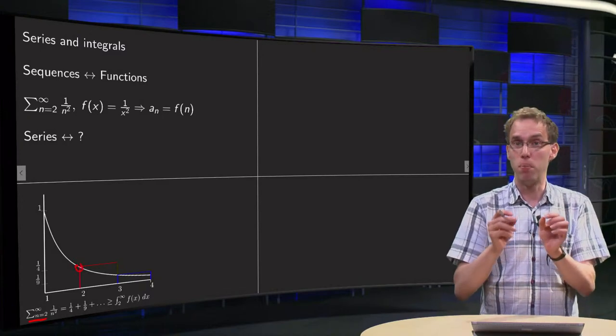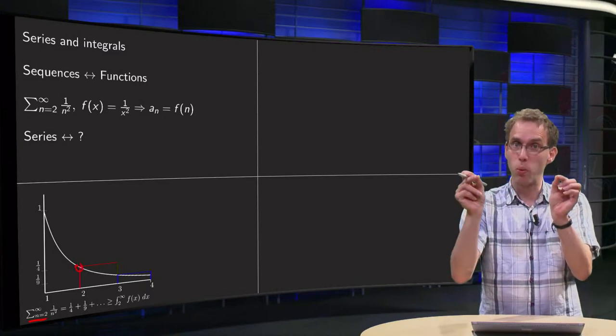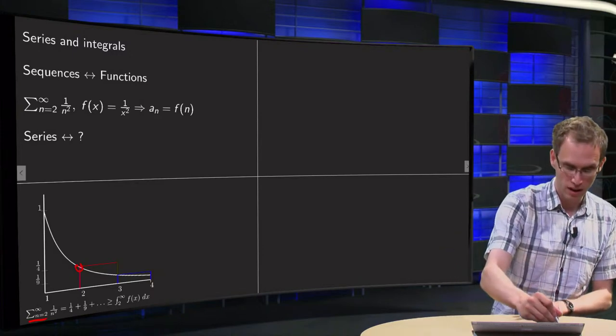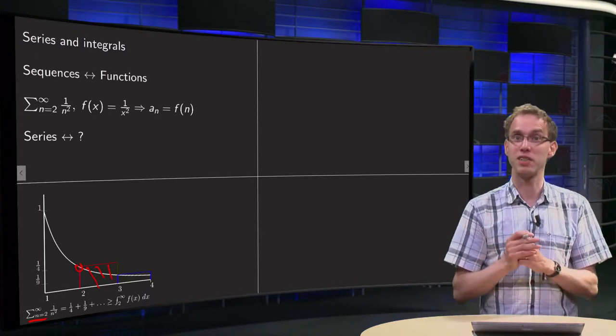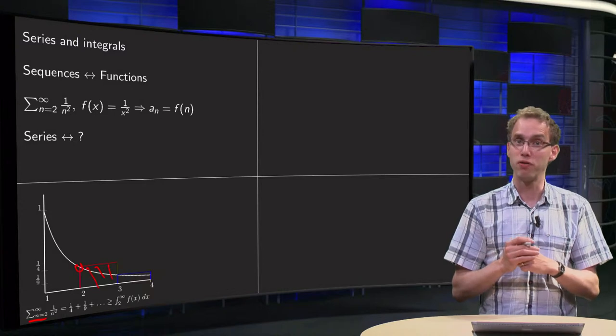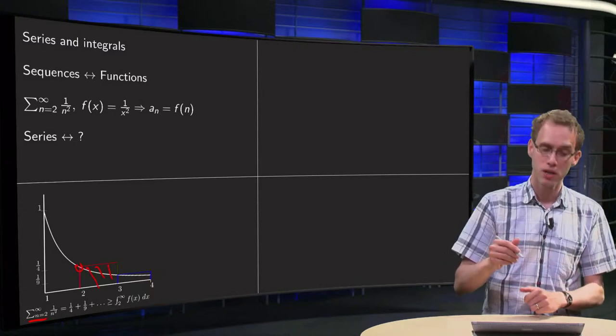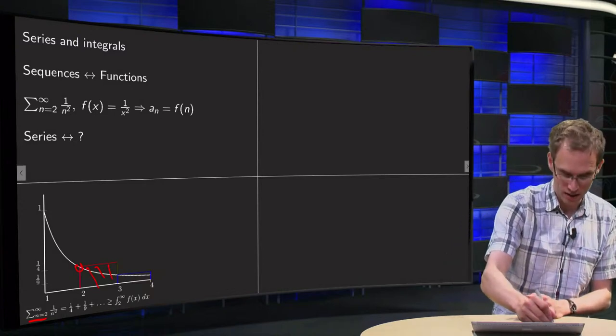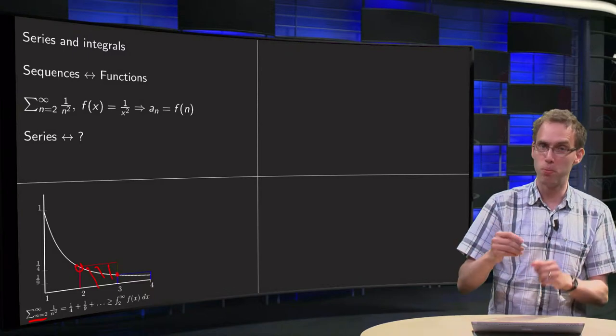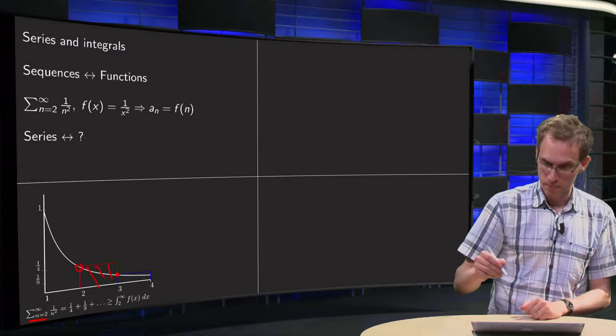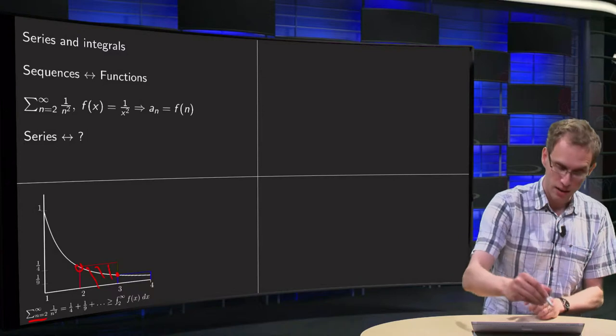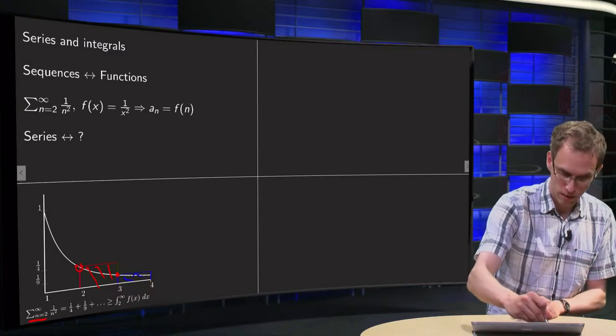So, if I make a box with width 1 and height of 1 over 4, then the area over here, 1 over 4 times 1 equals 1 over 4. And for the second term, I have 1 over 9, so the height is the intersection over here, so I again make a box with width 1, the blue box, and then I get here a 1 over 9.